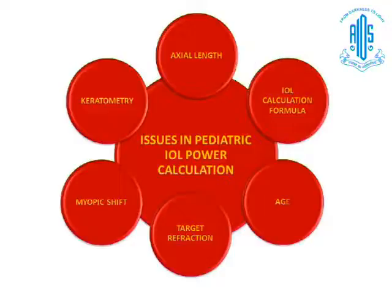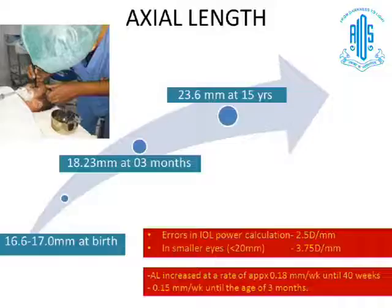There are some key issues in pediatric IOL power calculation. These include changes related to axial length and keratometry, which intraocular lens calculation formula to use, at what age the intraocular lens should be implanted, what the target refraction in a child should be, and what is the myopic shift. We will take these issues one by one.